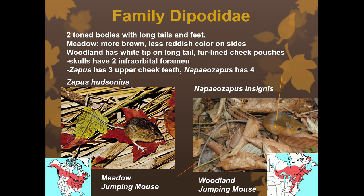Another way to tell the two jumping mouse species apart is by skull: the meadow jumping mouse has three upper cheek teeth, while the woodland jumping mouse has four. So you can look for the white tip on the tail, the difference in coloration, and also tell them apart by skull. Looking at range, there's a big difference — you'll find the meadow in many areas where you won't find the woodland, though their ranges do overlap within West Virginia.